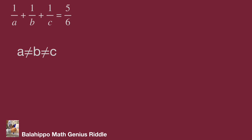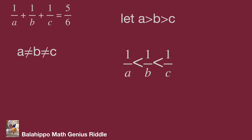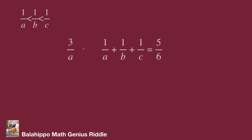I am going to collect extra information. Because A not equal to B not equal to C, I define A larger than B, B larger than C. Therefore, 1 over A is less than 1 over B, and 1 over B is less than 1 over C. Therefore we can set: 3 over A is less than 1 over A plus 1 over B plus 1 over C equals 5 over 6, and less than 3 over C.